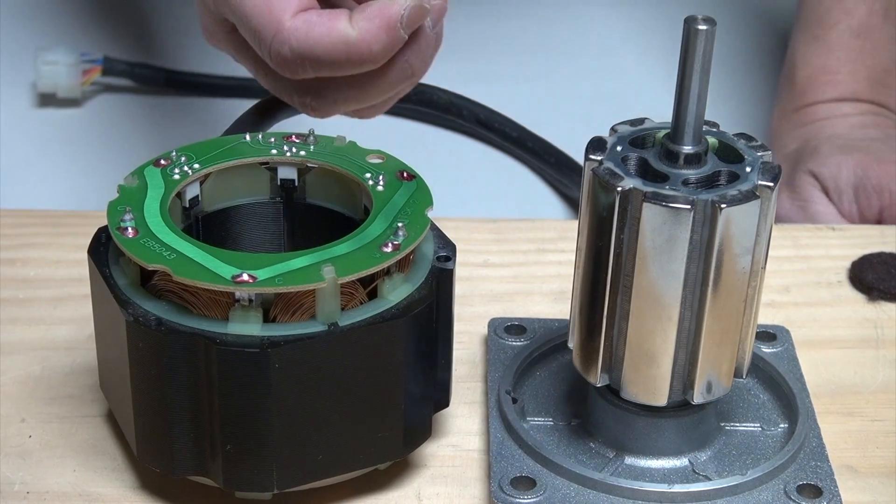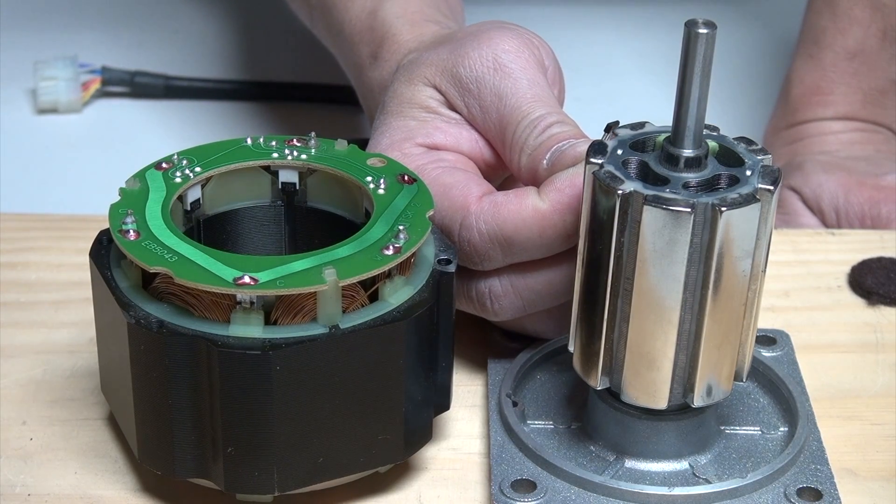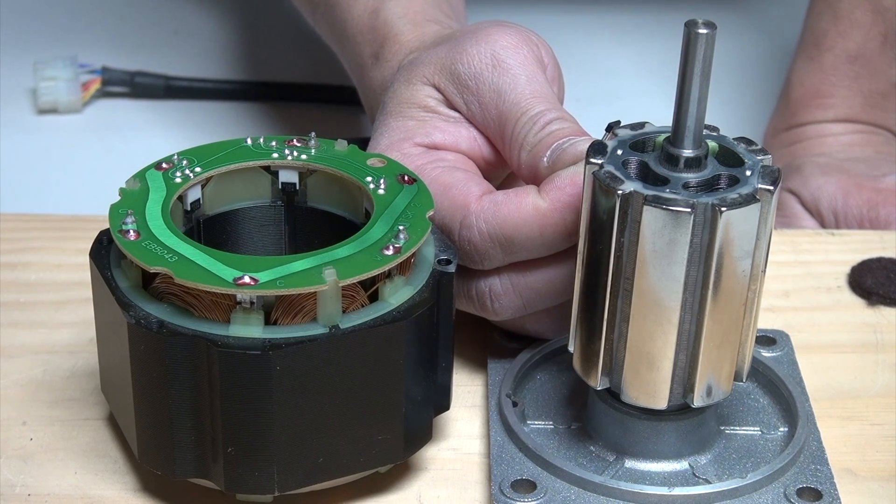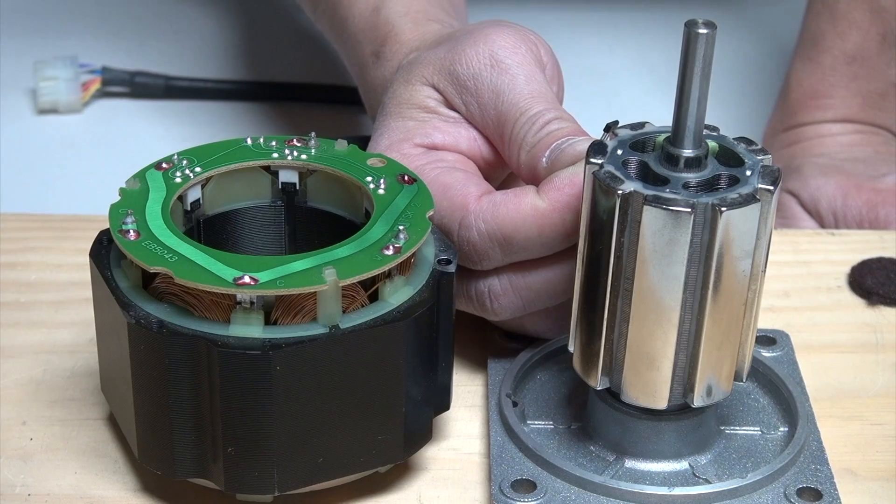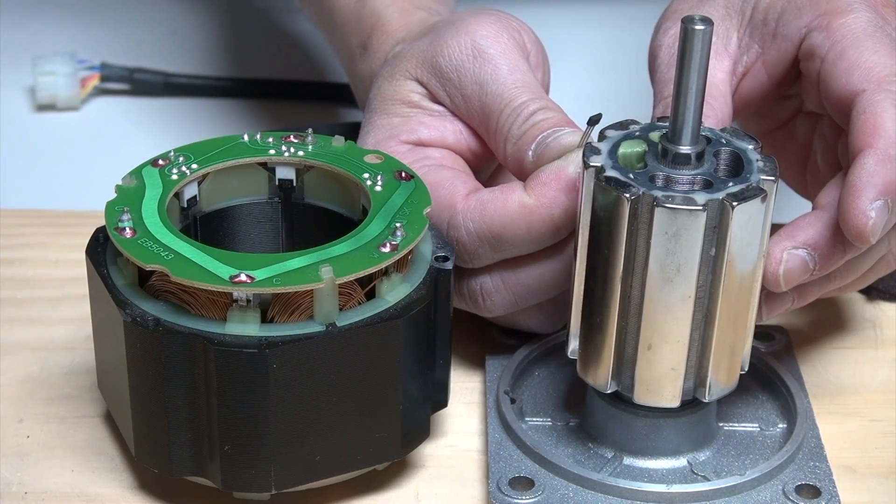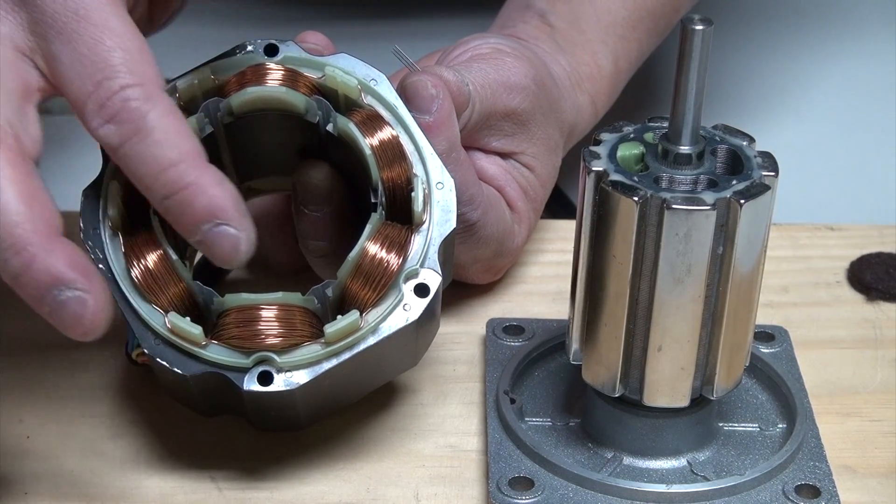How do these Hall sensors provide electricity to the motor? Their job is to collect magnetic field information and provide that information to the controller.